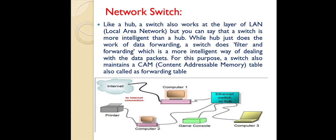A switch has a table called the Content Addressable Memory (CAM) table. In this memory it maintains the filtering and forwarding of data — that is, which data is transported to which device, and whether the data has been received by that device. So a switch performs the role of a hub by connecting computers, but additionally handles filtering and forwarding of data in a more intelligent way.